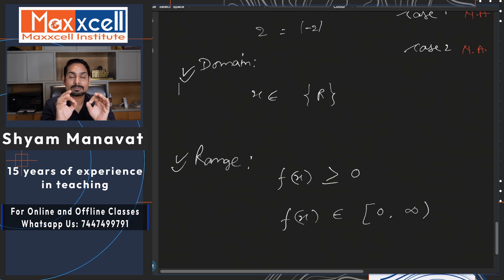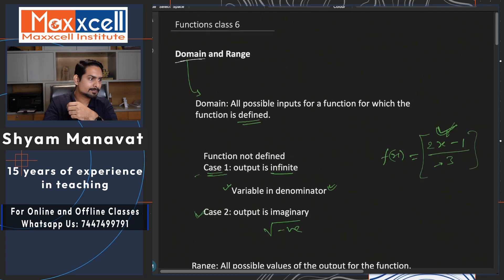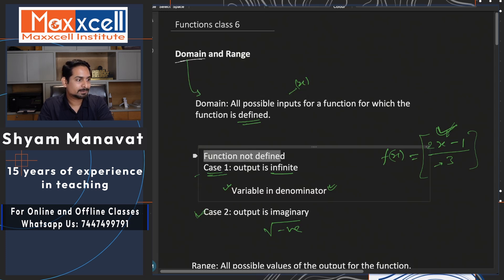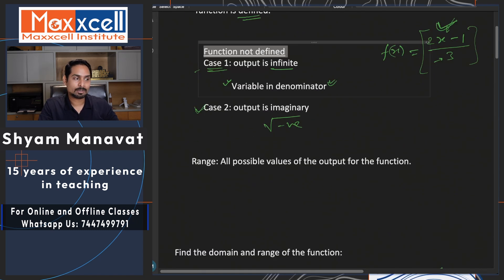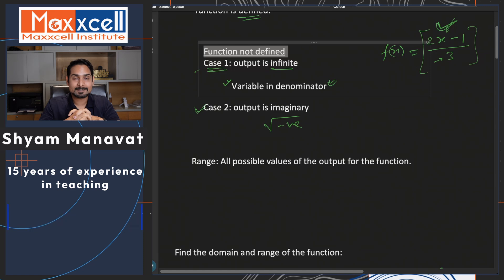Let me revise: domain means all possible inputs, or all possible values of x for which the function is defined. The function is not defined in two cases — case 1 and case 2 — which you need to understand. Range means all possible outputs of the function. I hope you understood domain and range. This is it for today's video. My name is Shah Manavad. Keep learning, keep solving questions, keep practicing — only practice can make you better. I will see you in the next lecture. Stay happy, stay healthy. Bye-bye.